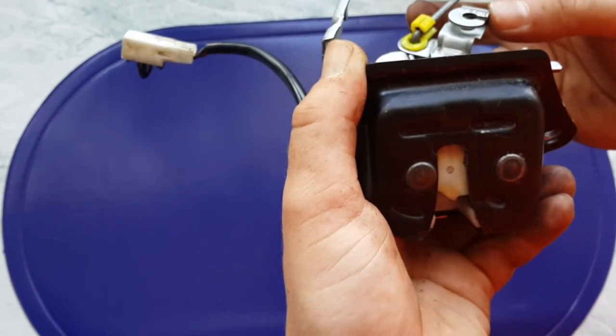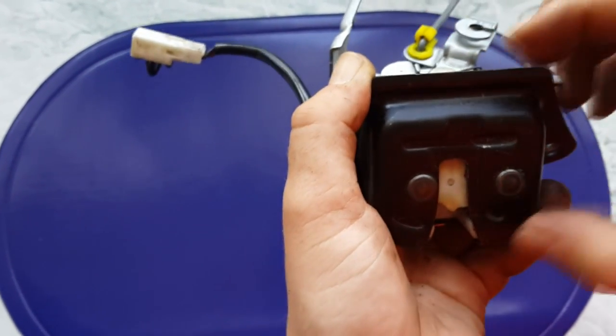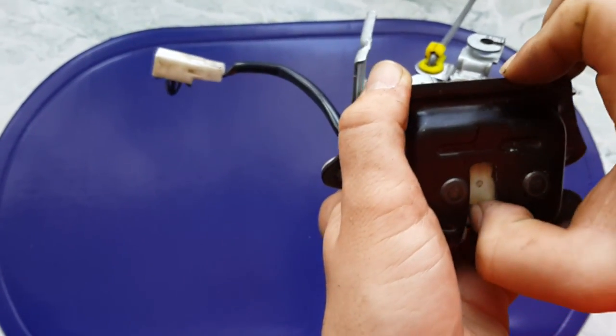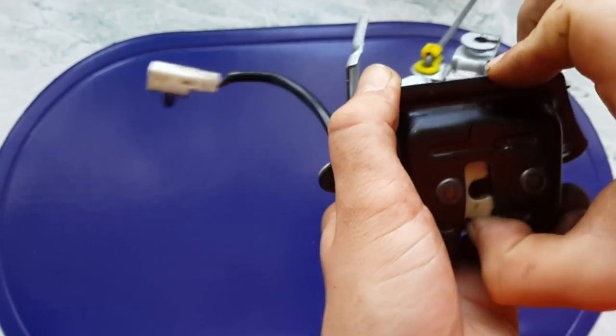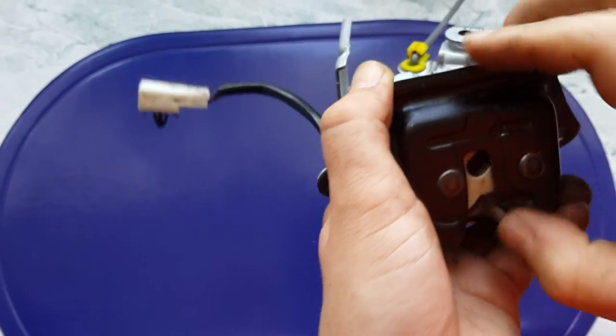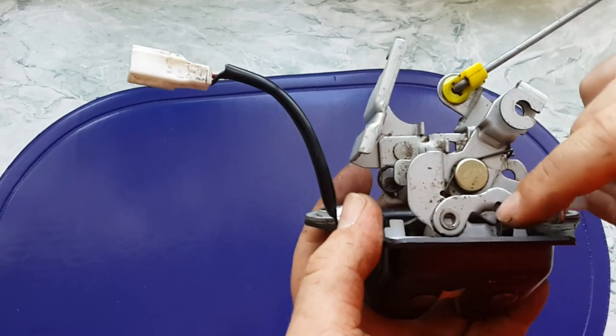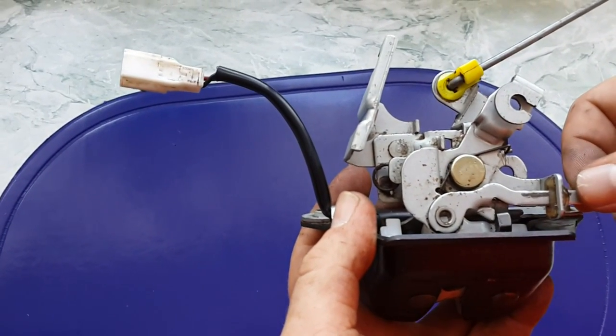So now for instance, the boot is open. Now if you close the boot again, this gets closed again. Just put it in the lock position, and then you can see that this arm here is still in the open position, you can still open the boot.